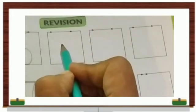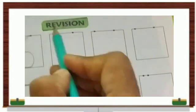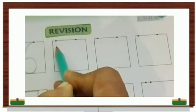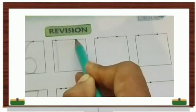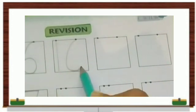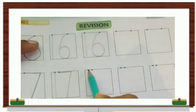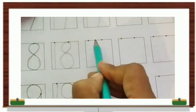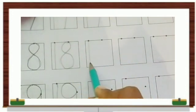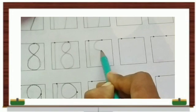Now let's write 16. We write 1, 6, 16. Next is 17, 1 and 7, 17. Then we write, after 17 comes number 18.